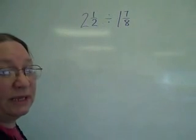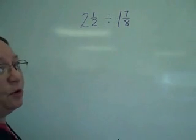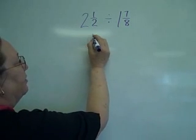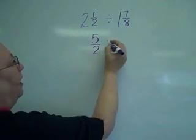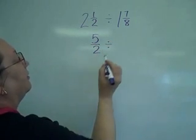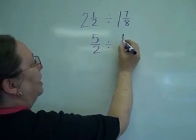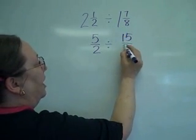What if I have 2 mixed numbers? I have to change both of them to improper fractions. So 2 times 2 plus 1 gives me 5 over 2. This is still a division, I have not flipped it over yet, so I've got 8 times 1 plus 7 is 15 over 8.